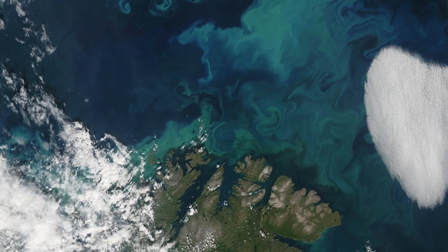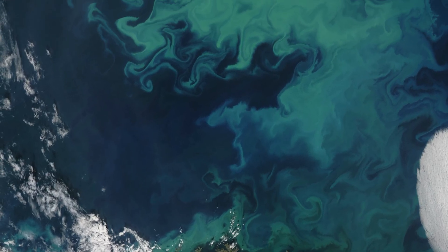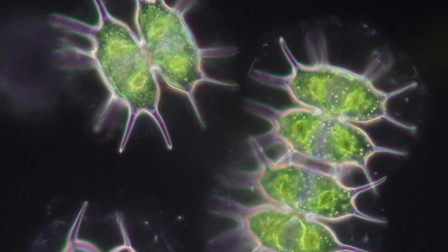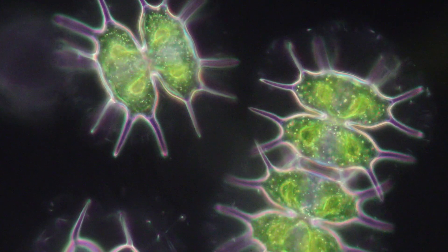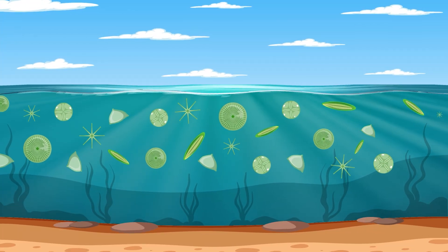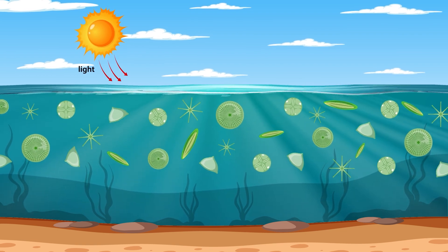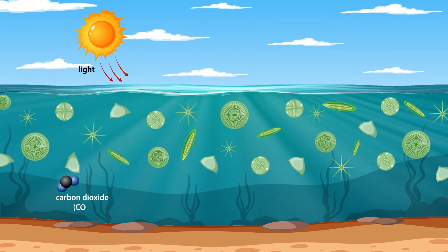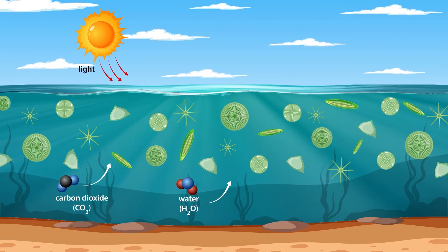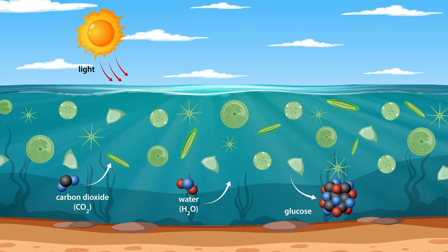Phytoplankton are tiny plant-like organisms that live in all parts of our ocean. Like land plants, they use sunlight to photosynthesize. They take in carbon dioxide and water from their surroundings to make glucose. In the process, they also release oxygen.